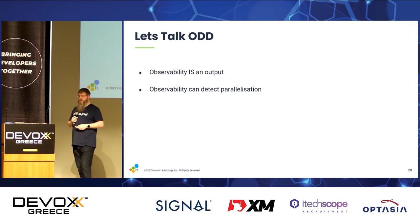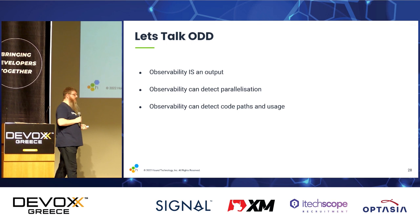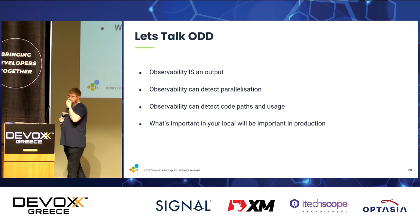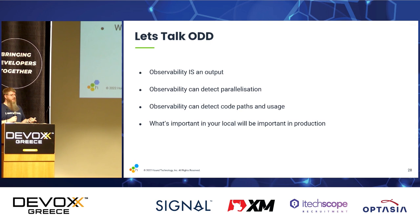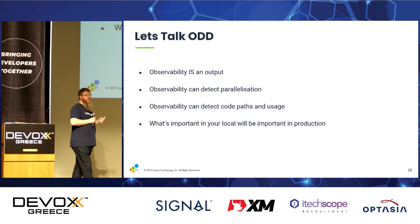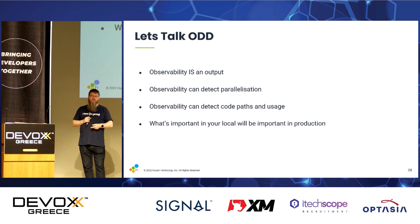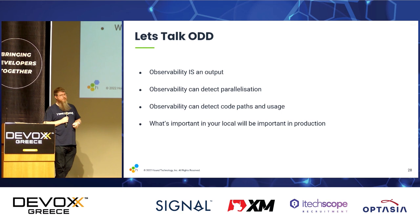Observability is an output from our application — when we go to production, we can't run without it. So why aren't we testing it? Why isn't it part of what we're testing holistically? Observability can detect things like parallelization, whether methods start at the same time, code paths — did I hit this particular branch or that one? What you care about on your local debugging journey is highly likely to be important when you go to production.